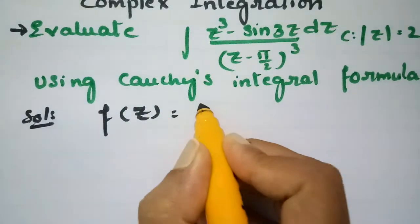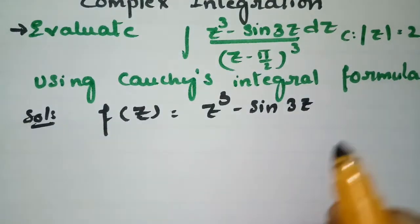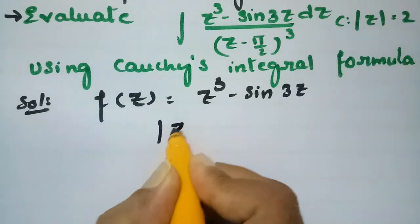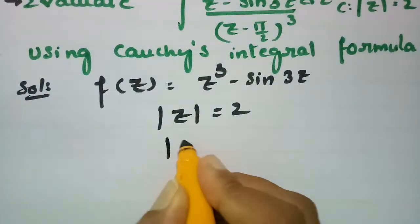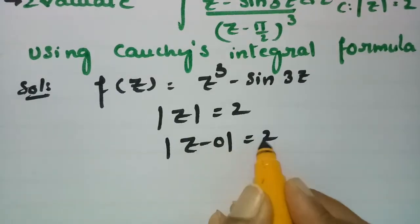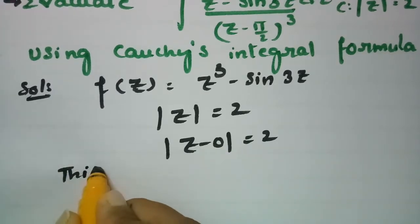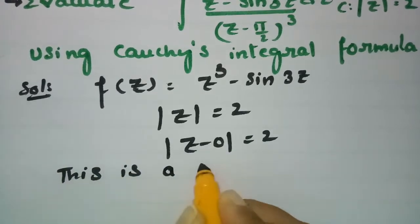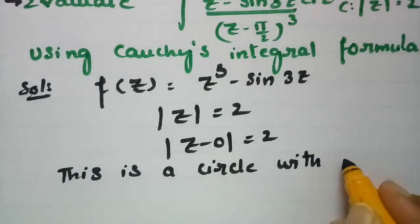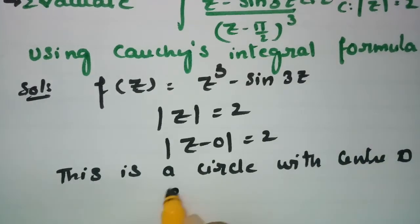So f(z) = z³ − sin3z. The circle is given as |z| = 2, which means the modulus of z minus 0 equals 2. This is clearly a circle with center 0 and radius 2.